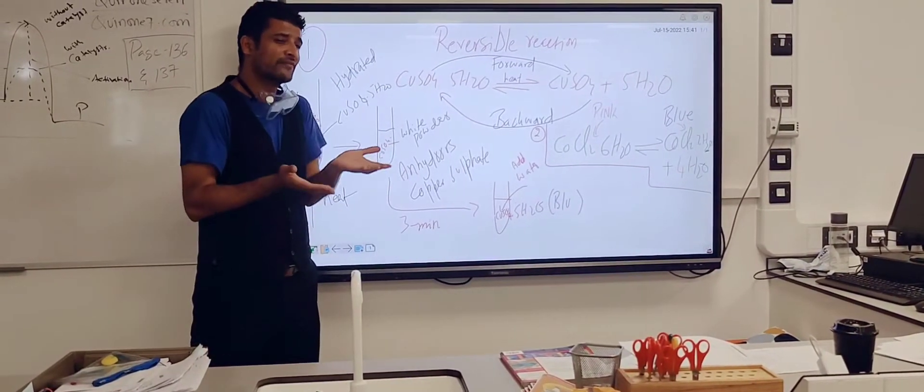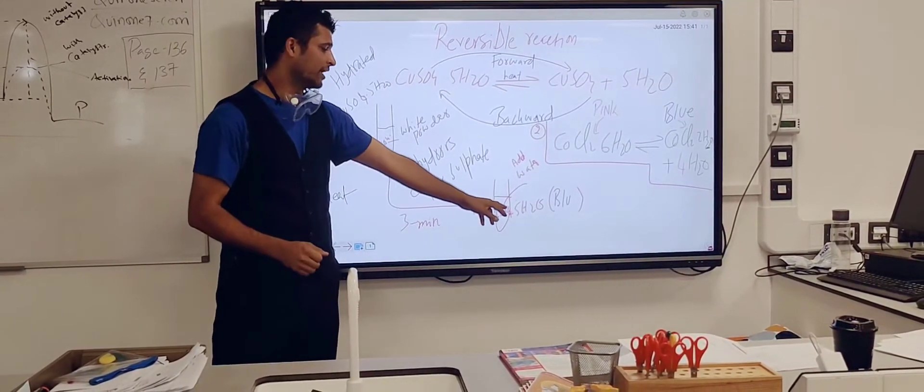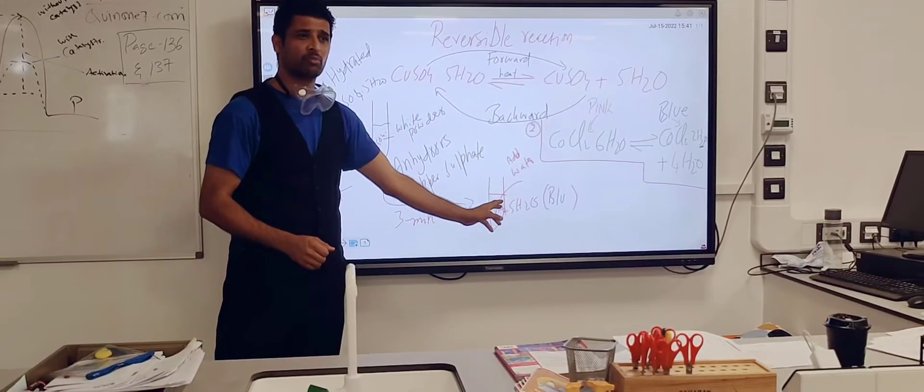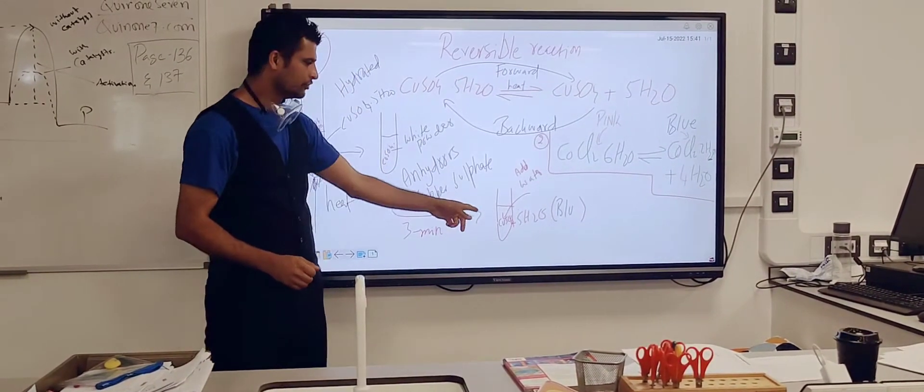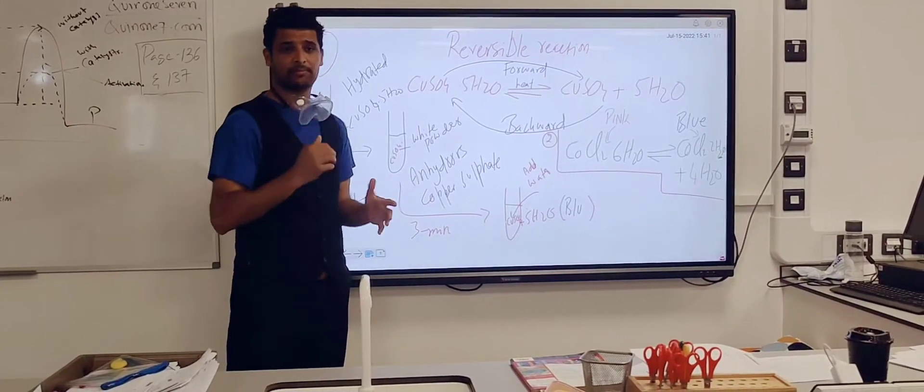Because it's exothermic, you have to wait for 3 minutes for your anhydrous copper sulfate to cool down and then you will be adding some water drops and what's going to happen at the end, you will get the copper hydrated sulfate. Now we are going to look at the back table.